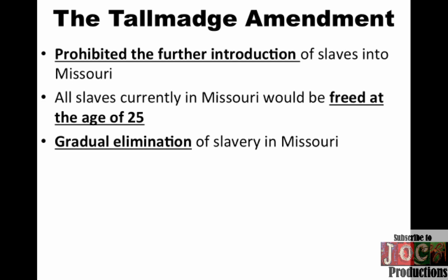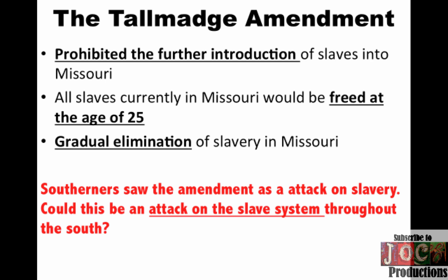What ended up happening is you had the Talmadge Amendment, which basically said to Southerners: hold up. That amendment would have prohibited the further introduction of slaves into Missouri. All slaves currently in Missouri would be freed at the age of 25, and there would be the gradual elimination of slavery in Missouri. Southerners saw this amendment as an attack on slavery — could this be the beginning of a sustained attack on the slave system and the Southern way of life?